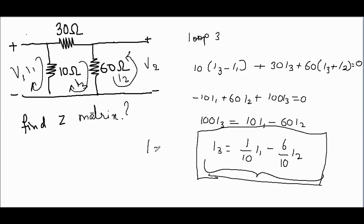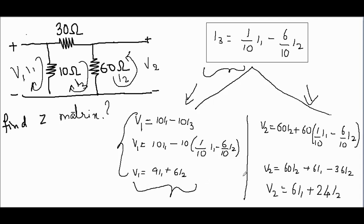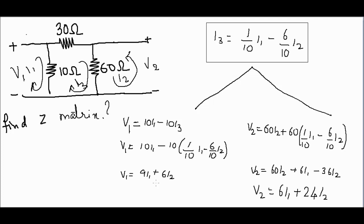Putting the value of I3 into V1, we get: V1 = 9·I1 plus 6·I2. Putting the value of I3 into V2, we get: V2 = 6·I1 plus 24·I2. So finally we get two equations for V1 and V2.